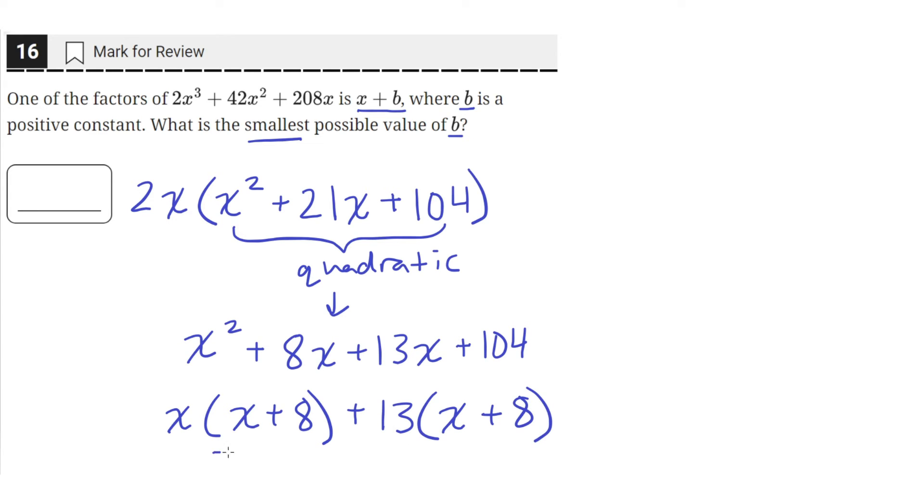Now we see that this x plus 8 quantity is common to both of these terms. So we can factor this x plus 8 from both. So when we do that, let's go up here. We'll be left with an x plus 8 on the outside, and then we'll be multiplying x plus 8 with an x and a 13. So x plus 13.